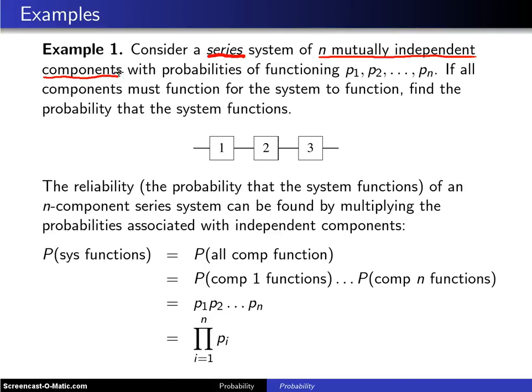Mutual independence in this case intuitively means that the failure of one component has nothing to do with the failure of the other component. These components have probabilities of functioning P1, P2, up to Pn.